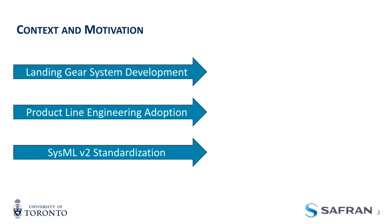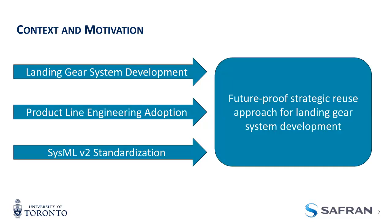In parallel to all of this, SysML v2 is being standardized — it's not fully standardized yet, but it's on its way. It's looking to introduce some variability modeling concepts in system modeling, and so we want to harness that and make sure that if we develop a product line model, we don't have to scrap it when SysML v2 comes out. The goal is to find a future-proof, strategic reuse approach to landing gear system development.